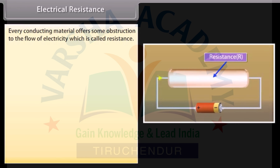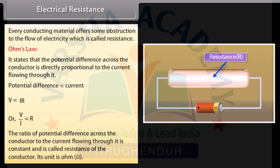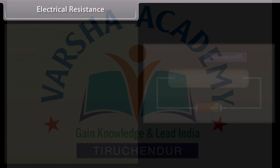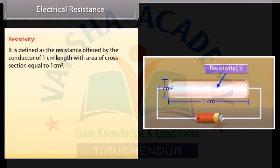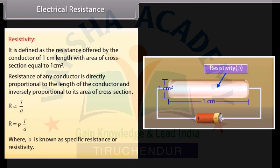Electrical resistance: Every conducting material offers some obstruction to the flow of electricity, called resistance. Ohm's law states that the potential difference across a conductor is directly proportional to the current: V = IR. Resistance R = V/I; its unit is ohm. Resistivity (ρ) is defined as the resistance of a conductor of 1 cm length with cross-section 1 cm². Resistance R = ρL/A, where ρ is the specific resistance or resistivity.